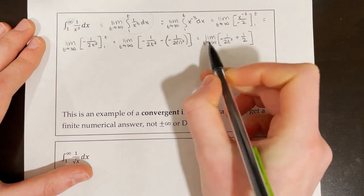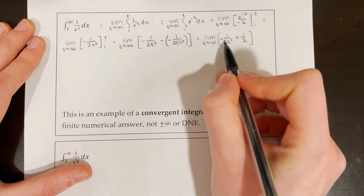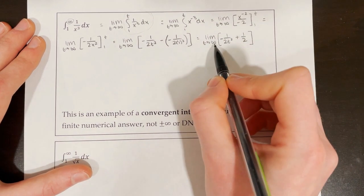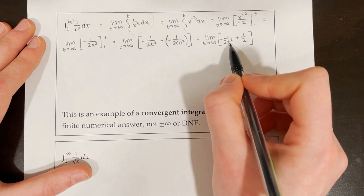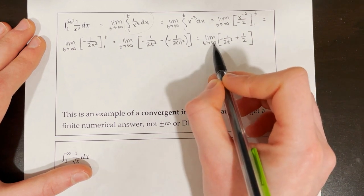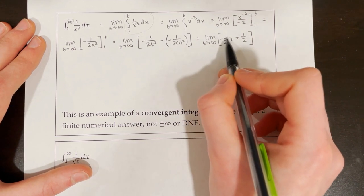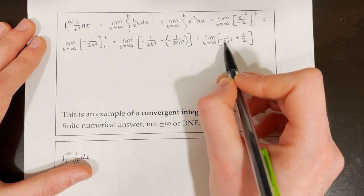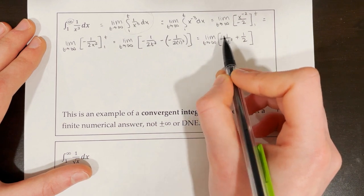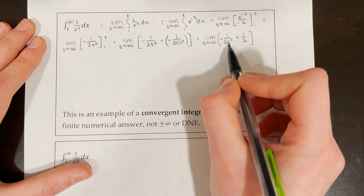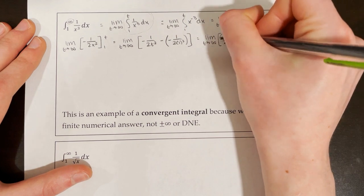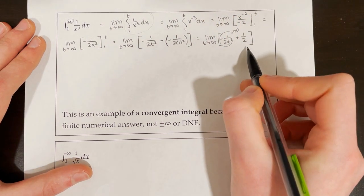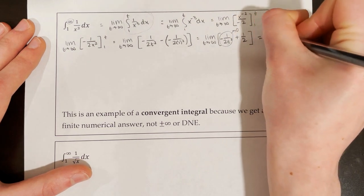Cleaning that up, we get the limit as t approaches infinity of negative 1 over 2t squared plus 1 half. Now we plug in infinity for t. We'd have negative 1 over 2 times infinity squared, meaning our denominator is a really large number. Taking 1 divided by a really large number gets closer and closer to 0. So that part approaches 0, and we are left with 1 half. Therefore the integral from 1 to infinity of 1 over x cubed dx is equal to 1 half.